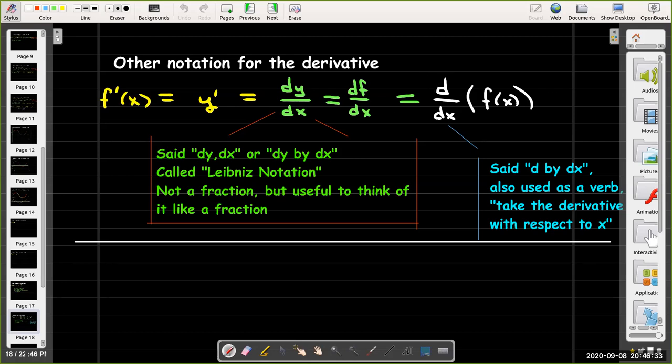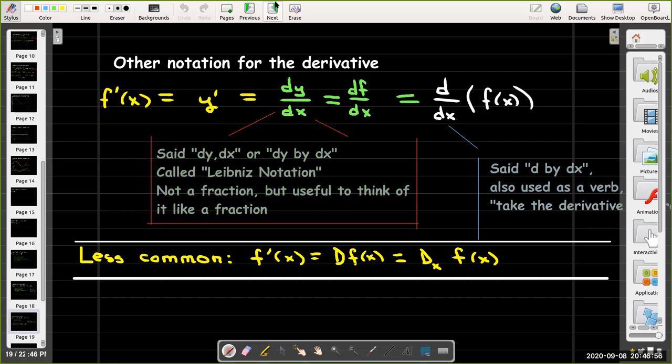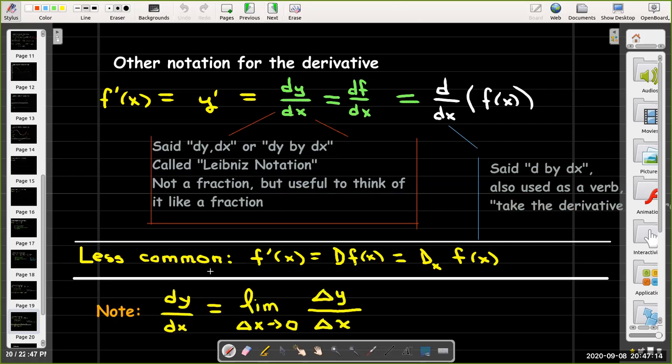And then here's something that we're going to use a lot, is we're going to have d by dx of something, d by dx of f of x. And so this d by dx, we all think of it as a verb, meaning take the derivative with respect to x. There are some less common notations, at least in a first semester calculus. Maybe in upper division math courses, you'll see this more, maybe even in a linear algebra class. d by dx. And going back to Leibniz notation, we often write that dy by dx is the limit as delta x goes to zero delta y over delta x. And that emphasizes the notion that delta y and delta x are finite differences in y and a finite difference in x. But dy is an arbitrarily small difference in y.